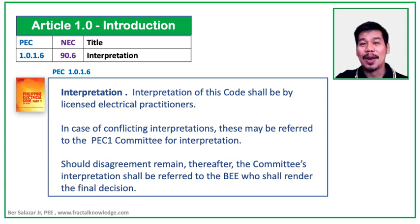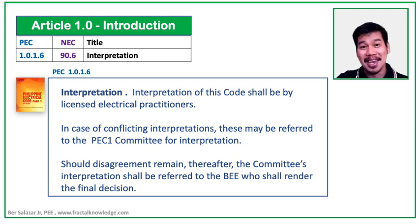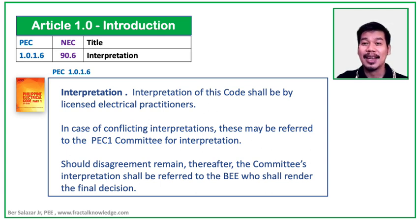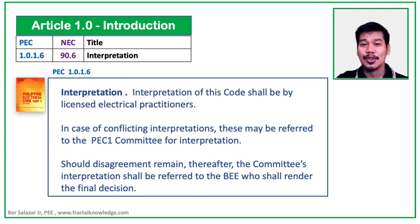Moving on to PEC Section 1.0-1.6, Interpretation of the Code — it is very clear that the code can be interpreted by a licensed electrical practitioner. That's you and me. In case there is a conflict, we can ask the PEC Committee for interpretation. If disagreement still remains, the committee interpretation shall be given to BEE, who shall render the final decision. Our PEC Committee and BEE Committee can be easily reached if you have any questions or conflicts regarding the Philippine Electrical Code, and they are very willing to reply.